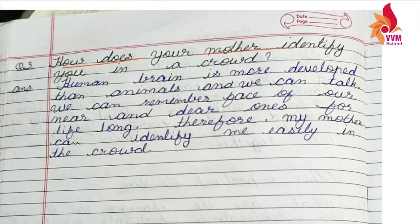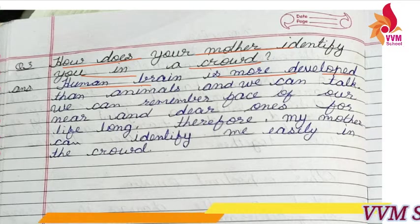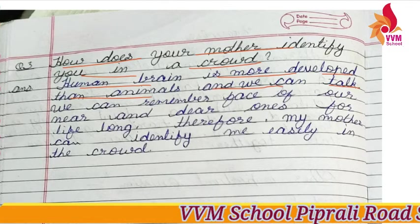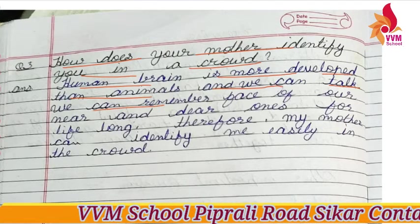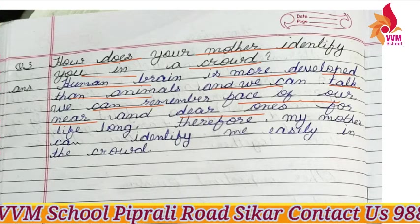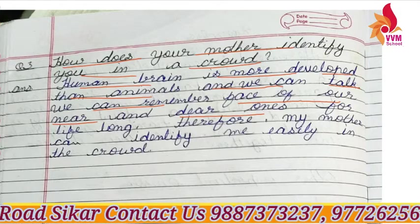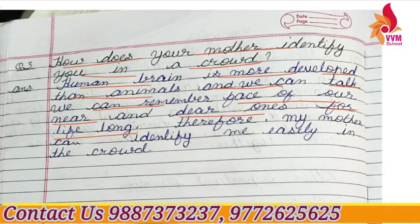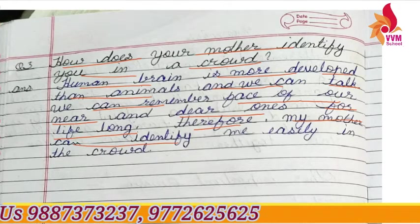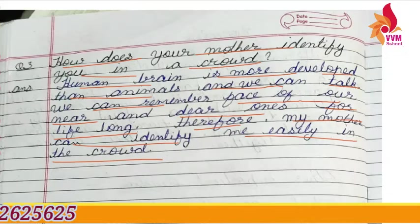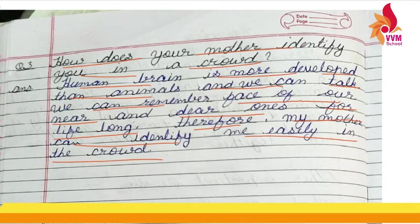Next we have: how does your mother identify you in a crowd? The human brain is more developed than animals. Because we remember our loved ones, their faces always stay with us for life long. Therefore, my mother can easily identify me in the crowd. So now our chapter is completed and in our next class we will discuss about our next chapter. Thank you.